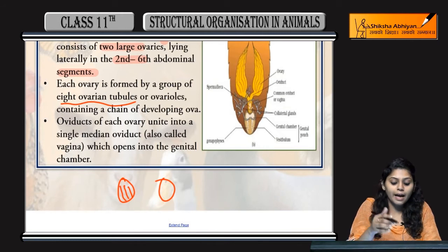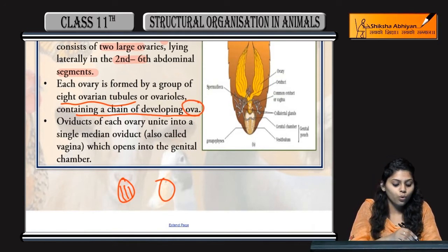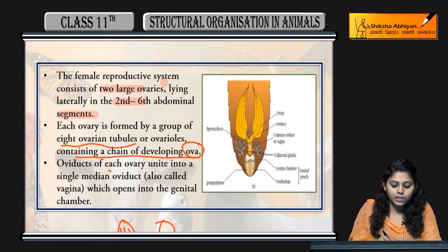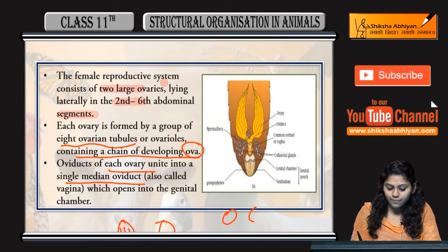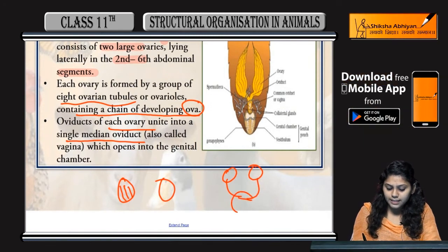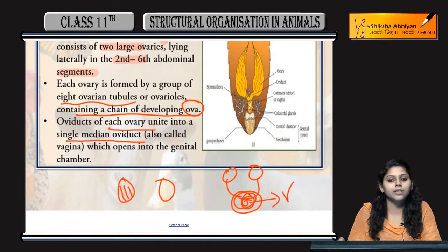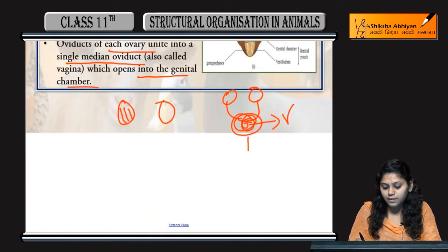These ovarian tubules contain a chain of developing ova. The oviducts of each ovary unite into a single median oviduct, which we call the vagina, and this opens into a genital chamber.